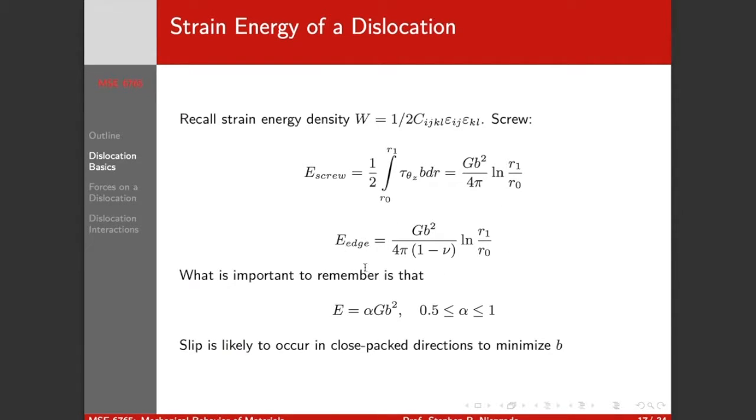We do the same thing for the edge dislocation. We still have GB² over 4π with a 1 minus the Poisson's ratio. So this is going to be about 0.6 for most metals, 0.7 for most metals. So very similar to the energy for a screw dislocation. And so the exact form isn't important. What's important to remember is that the energy of a dislocation is proportional to GB² - the shear modulus times the Burgers vector squared.